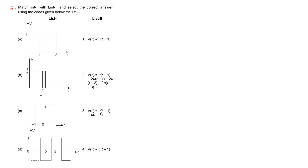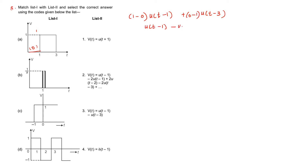Next problem — match list 1 with list 2 and select the correct answer. See the first one — it is fully a unit step signal. There are two changes for the signal, at points u of t minus 1 and u of t minus 3. For u of t minus 1, the signal amplitude changes from 0 to 1, so final is 1, initial is 0. For the next point, final is 0, initial is 1. So the equation is u of t minus 1 minus u of t minus 3. Therefore, A equals 3.